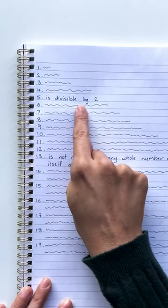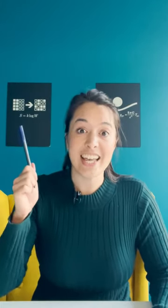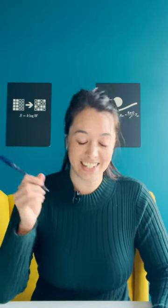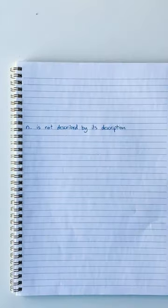Like five is not divisible by two. Well, that's a description of a number, isn't it — that it doesn't match its description. Let's add it to the list: N is not described by its description.